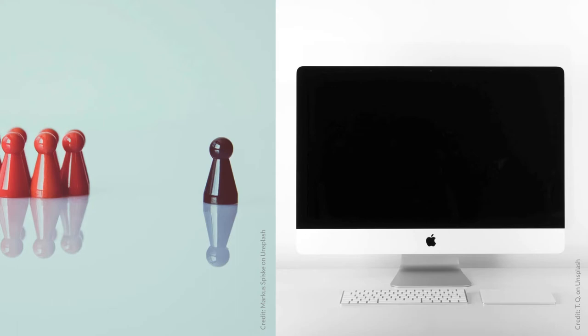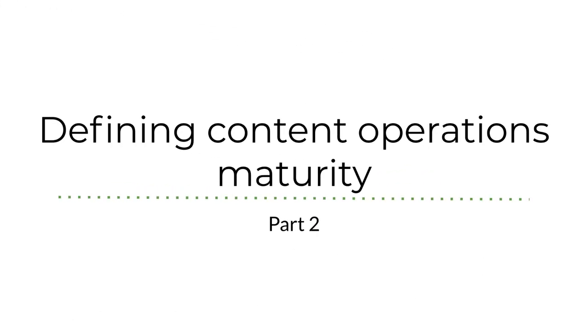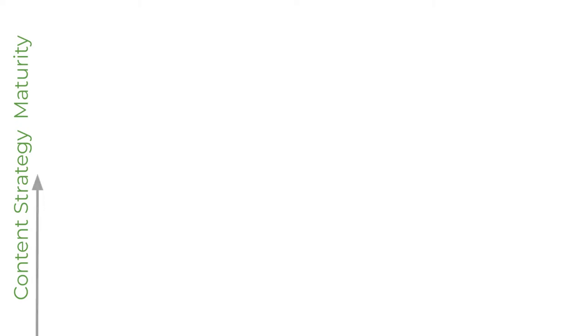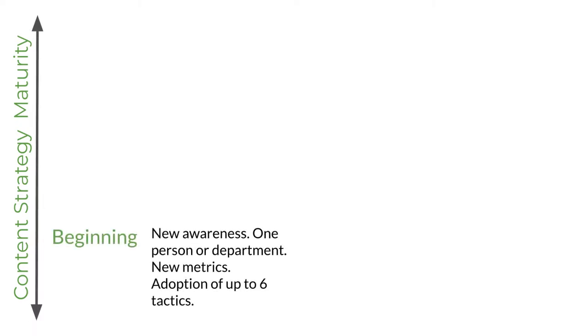I'll move on to that topic in the next part of the lecture. Let me introduce you to the concept of content operations maturity. Based on their research, Hayne, Lewis, and Marsh categorized the associations at which their respondents worked into three levels of content strategy maturity. At the lowest level, called "beginning," there was a new awareness focused on one person or one department. They probably had some new metrics to look at, and they adopted up to six of the tactics listed in the research.